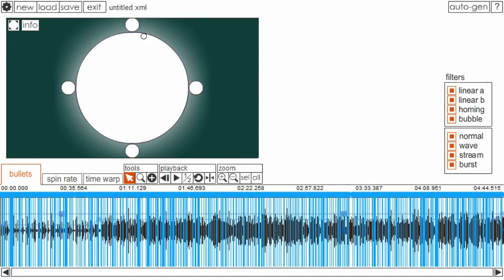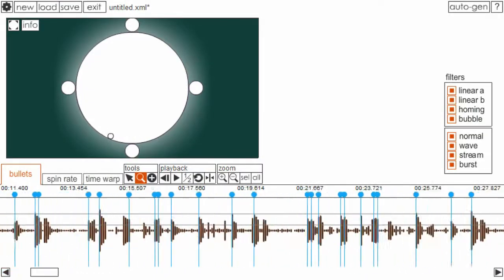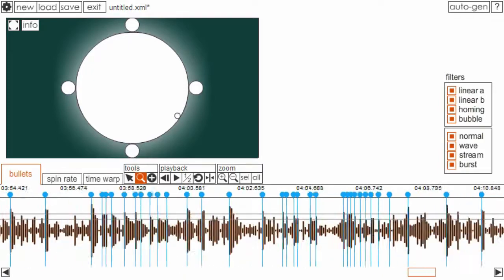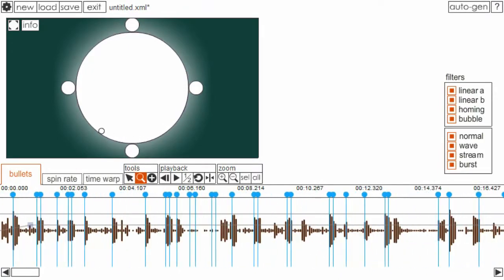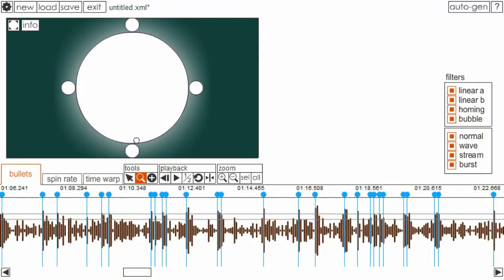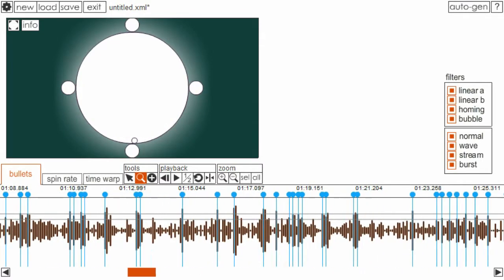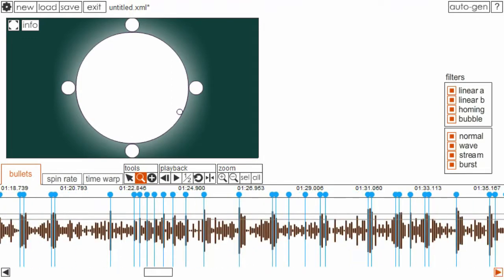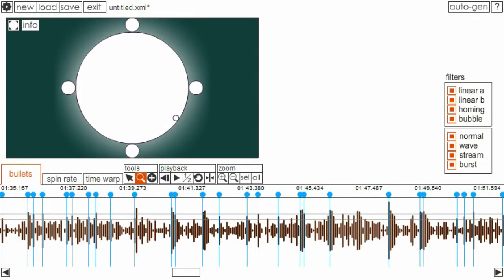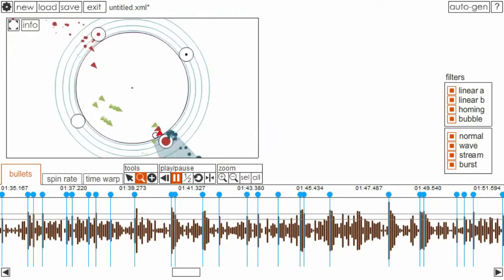So, level editor. We have it here. You can choose bullets, spin rate, time warp. You've got your waveform at the bottom, which is incredibly cool. So, this is obviously the sound wave of the song. This is a song that I made. There's this track here, which has used the auto-gen function, up at the top right, which will basically just populate your own music with shit to fire at you. It's really rich with features. You can play back tracks and you can watch it in the background of what will actually happen.